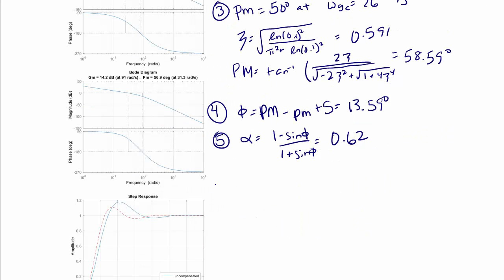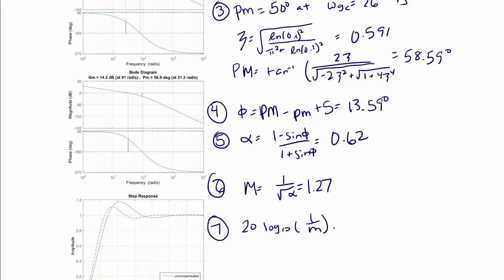For step six, we find the magnitude where the compensator has the maximum phase angle which is m is equal to 1 over the square root of alpha which equals 1.27. And for step seven, we analyze the Bode plot to find the frequency where the magnitude is 20 log base 10 of 1 over m which is equal to negative 2 decibels. So when we look at our original phase plot, we see that this happens at omega m, which is 0.5 equals to 31 radians per second.